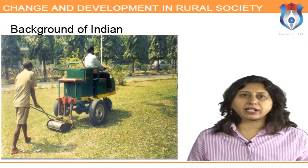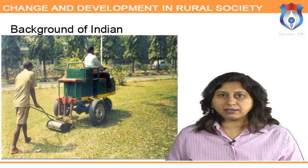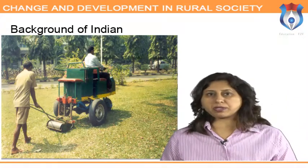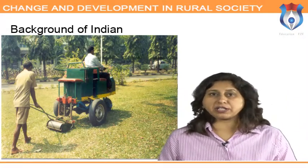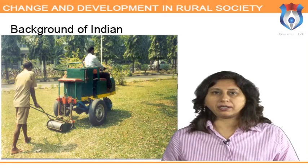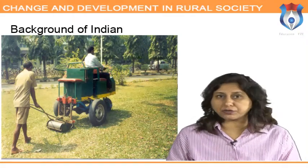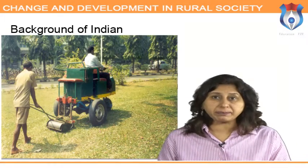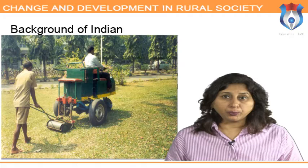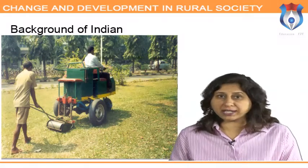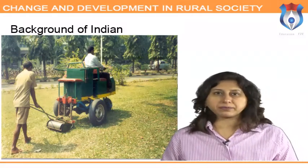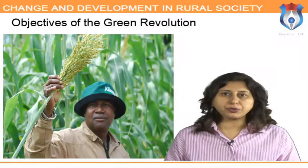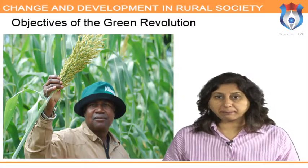Background of Indian agriculture: the levels of agricultural production in India in the post-colonial period were much higher than in the colonial era. Between 1949-50, agricultural output grew at the rate of 2.7 percent per annum, compared to a mere 0.8 percent per annum earlier. The decision to adopt the green revolution was precipitated by the drought of 1966.